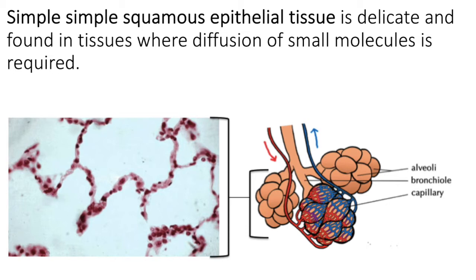We also find simple squamous epithelial tissue lining blood vessels. At the capillary level, where you only have that single layer of cells, diffusion of molecules is facilitated. We also find this tissue lining the membranes of the body — serous membranes — which line body cavities as well as the outside surface of organs. This tissue is very delicate and very fine.